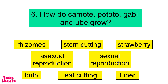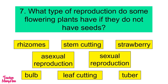Next, how do kamote, potato, gabi, and ube grow? They grow from tuber. And the last question: What type of reproduction do some flowering plants have if they do not have seeds? It's called asexual reproduction.